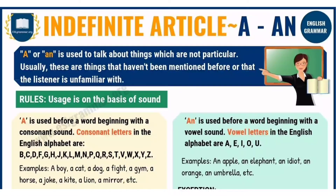Indefinite Articles. 'A' or 'an' is used to talk about things which are not particular. 'A' is used before words starting with consonant sounds and before vowels that have a consonant sound. For example: a woman, a dog, a fruit, a unit, a university, a Europe.